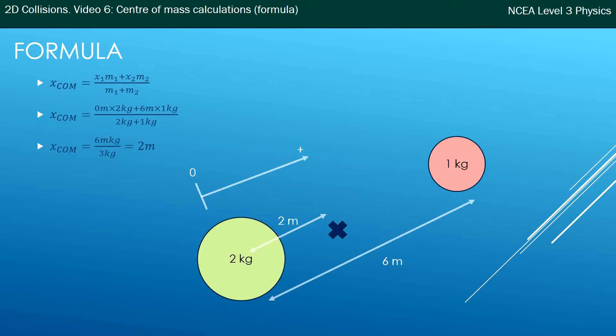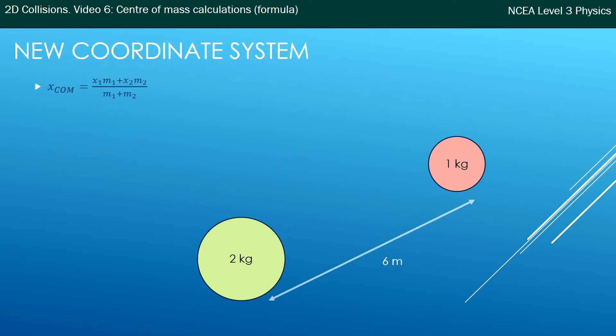So I just want to quickly show you what would happen if you chose a new coordinate system. Let's say do all your calculations from the middle between the two balls so 3 meters from either ball. So I draw my coordinate system on, I always have to draw an origin on and I always have to choose a positive direction. I've chosen positive to be towards the 1 kg ball.